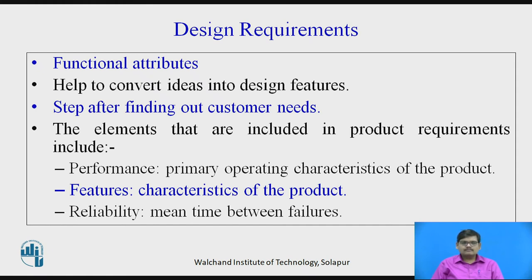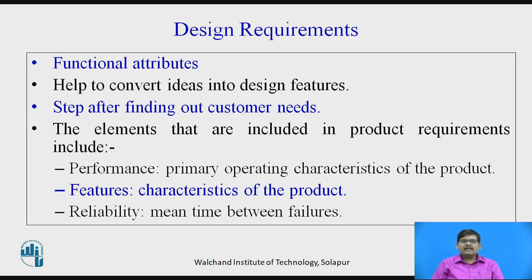The elements included in product requirements are: first, performance — the primary operating characteristics of the product, how the product will perform and to what extent it will satisfy the customer. Then features — the characteristics of the product, what additional features you are going to provide apart from the basic intended function. Then reliability — the mean time between failures, how reliable the product is, how often the product fails or when the product will fail. These criteria are required to be defined in design requirements.